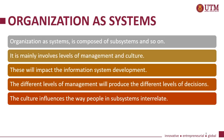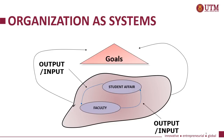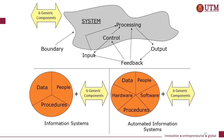Organization as systems: an organization as a system is composed of subsystems. It mainly involves levels of management and culture, which impacts information system development. The different levels of management produce different levels of decisions. The culture influences the way people in the subsystem interrelate. As you can see in the figure, both student affairs and faculty subsystems have output and input between themselves, done in order to achieve the goal set by the respective system. These figures explain the main components of a system, information systems, and automated information systems.